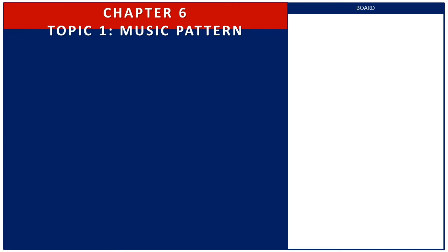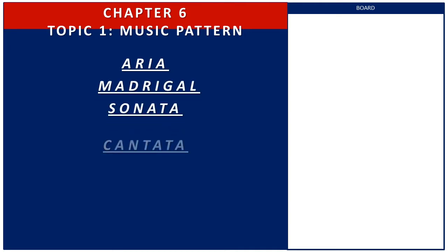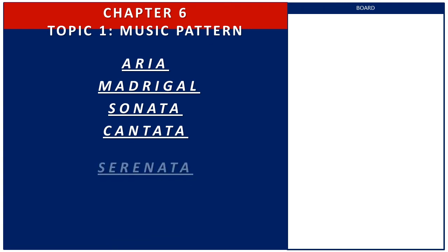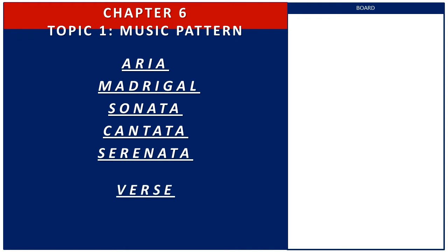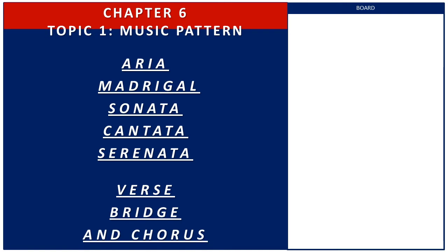Let us now move on to Chapter 6, Topic 1: Music Pattern. Classical examples include aria, madrigal, sonata, cantata, and serenata. Also remember that contemporary song forms are commonly broken down into three major components: verse, bridge, and chorus.